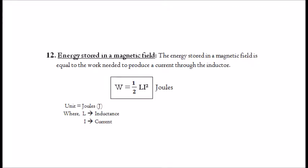12. Energy stored in a magnetic field. The energy stored in a magnetic field is equal to the work needed to produce a current through the inductor. It is given by: W equals half · L · I², with unit joules (J), where L is the inductance and I is the current.